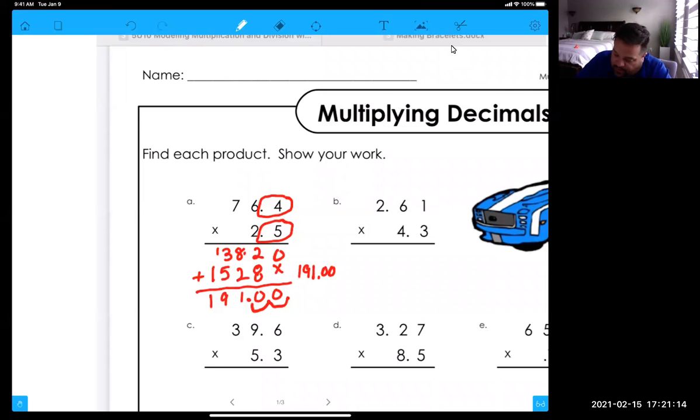Okay, so part b. Three times one is three. Three times six is 18. Three times two is six. Seven, eight, three. Put my placeholder in here. Four times one is four. Four times six is 24, regroup the two. Eight, nine, ten.